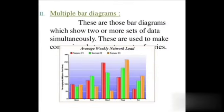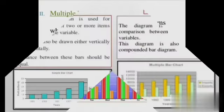These are those bar diagrams which show two or more sets of data simultaneously. That means at one position, that is 1991, two or three positions.